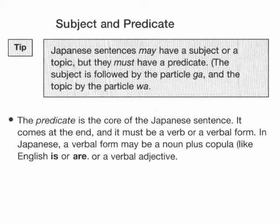In Japanese, a verbal form may be a noun plus a copula, like the English 'is' or 'are', or a verbal adjective.